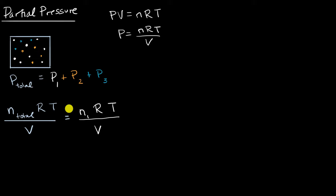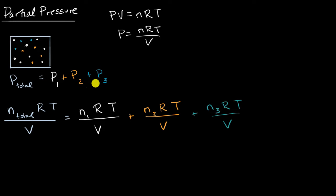The volume is going to be the same since they're all in the same container. Then we add the number of moles of gas two times the ideal gas constant — which is the same for all gases — times the temperature, divided by the volume. And then we add the number of moles of gas three times the ideal gas constant times the temperature divided by the volume. I just happen to have three gases here, but you could clearly keep going and keep adding more gases into this container.